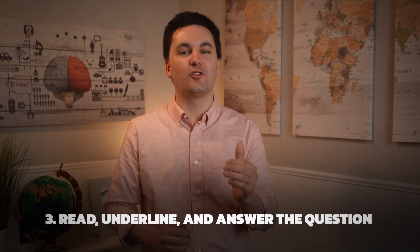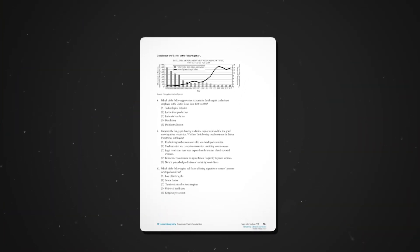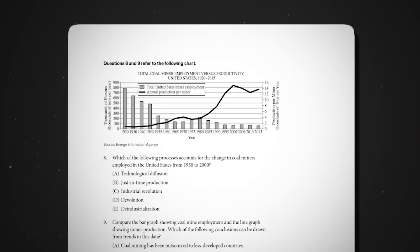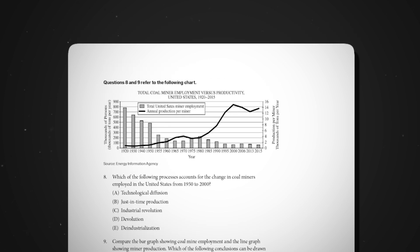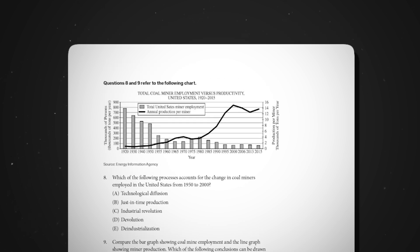All right, now comes step three. Read, underline, and answer the question. So after spending time with the stimulus, we now move on to the question. Going back to our example, I can see that the question is asking for a reason for the change in coal miners employed in the United States from 1950 to 2000, which I already noticed when observing the data before I read the question.